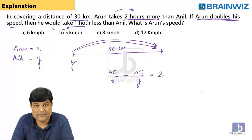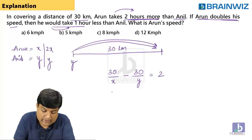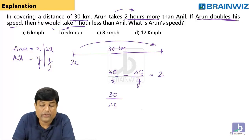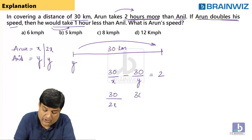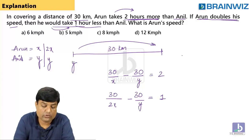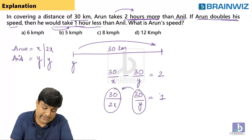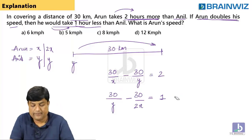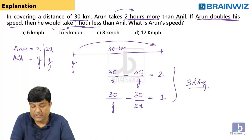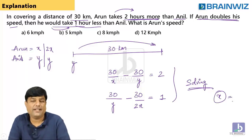If Arun doubles his speed, the new speed is 2x. Anil has no change. The new equation becomes 30 over 2x for Arun's new time, and 30 over y for Anil's time, which remains the same. The gap between them is 1 hour — Arun takes 1 hour less than Anil. Solving these 2 equations will give the answer, giving you the value of x.